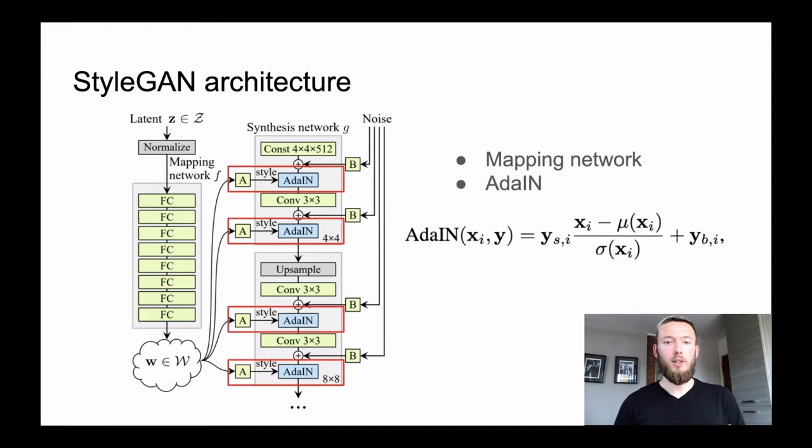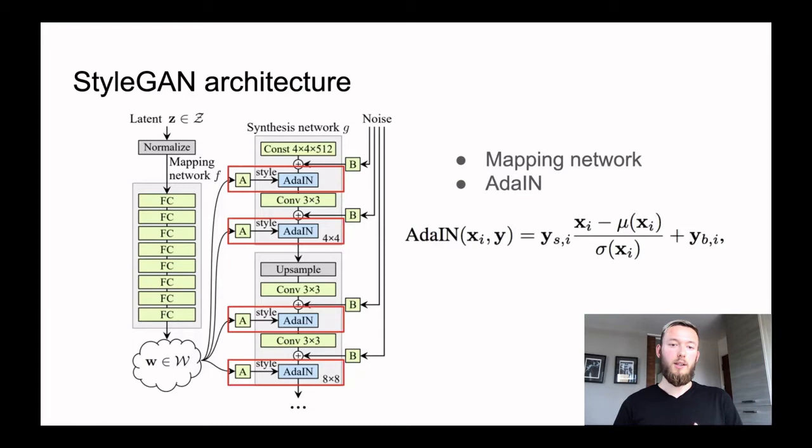The next improvement is the AdaIN layer — a kind of normalization layer which helps train the model more stably and faster. It also helps to inject the latent variable w into the generator, because previously the latent variable went only at the beginning of the generator, and now it is injected at each layer. Because of that, the generator probably doesn't forget what it should generate.